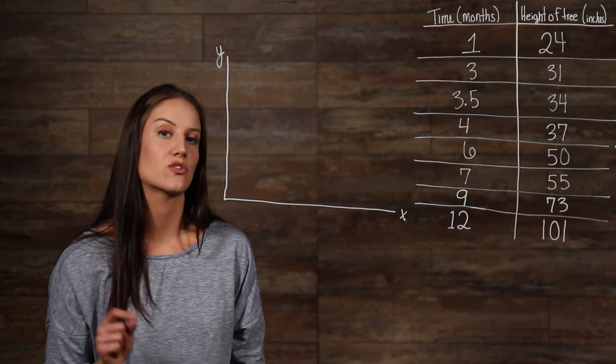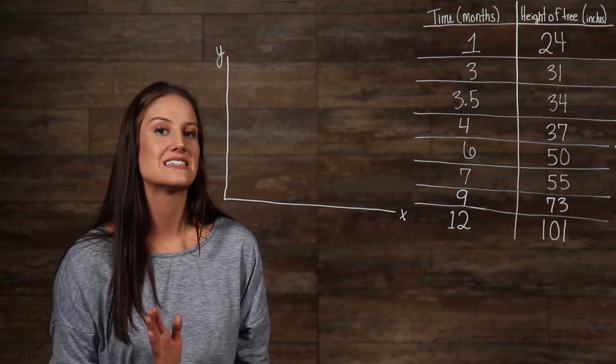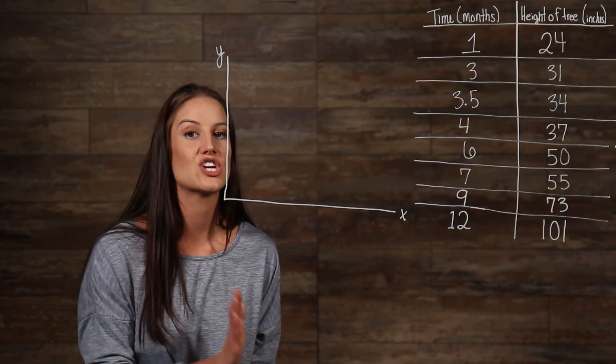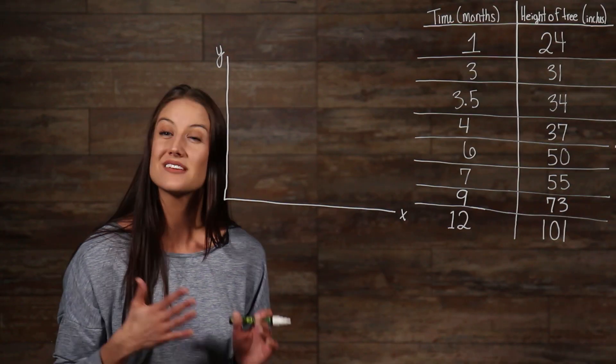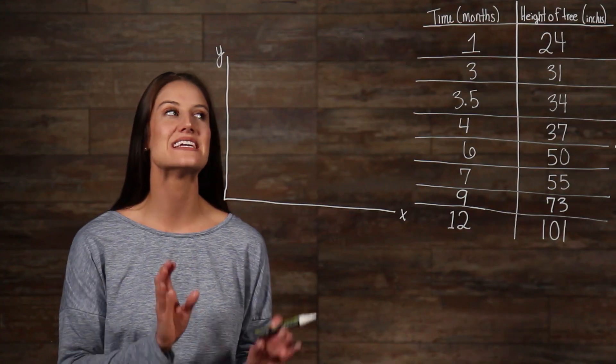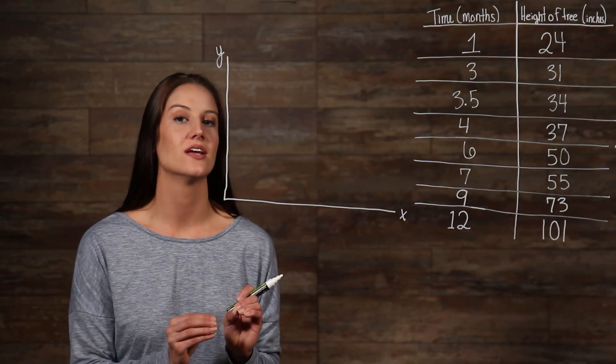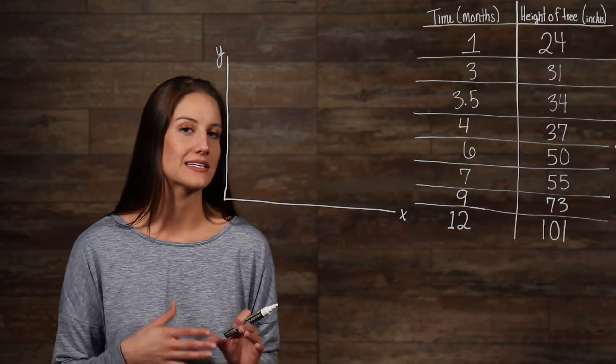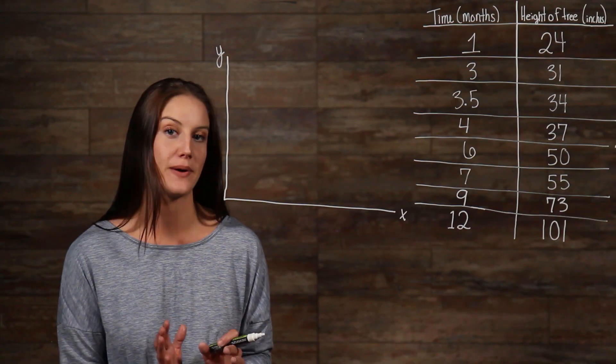Often times, when working with graphs, the data you are given is dealing with the rate at which something changes over time. Well, this makes it easier for you to identify your dependent and independent variables. Because time is always independent, you can't do anything to affect time. You are constrained by it.